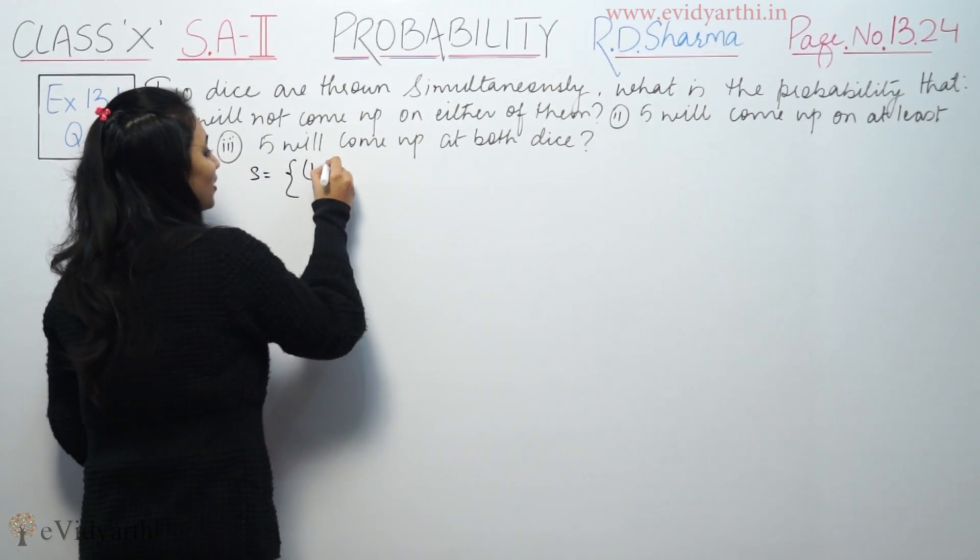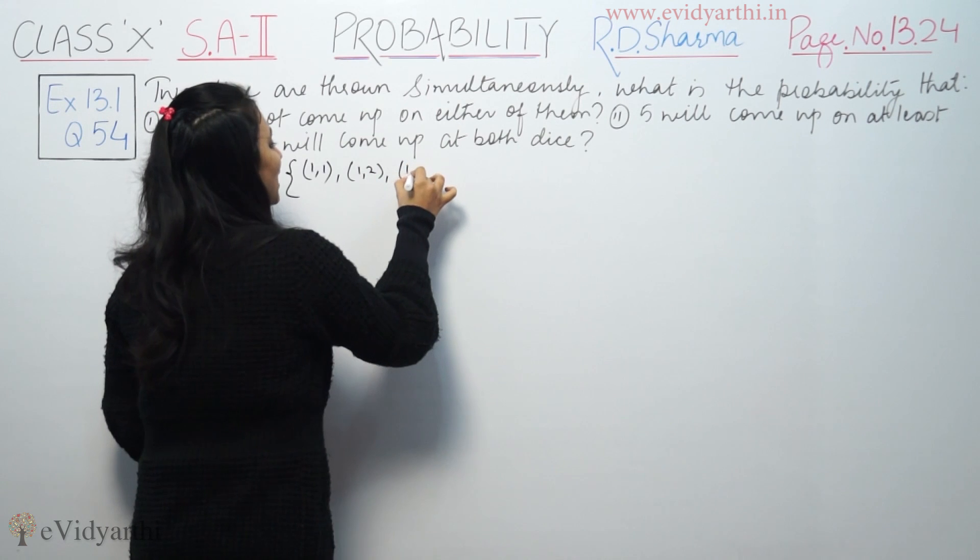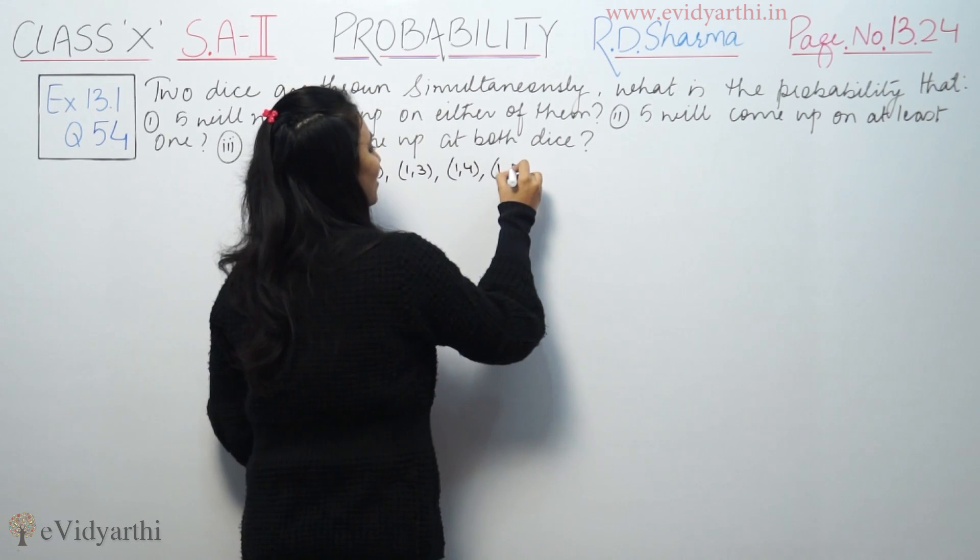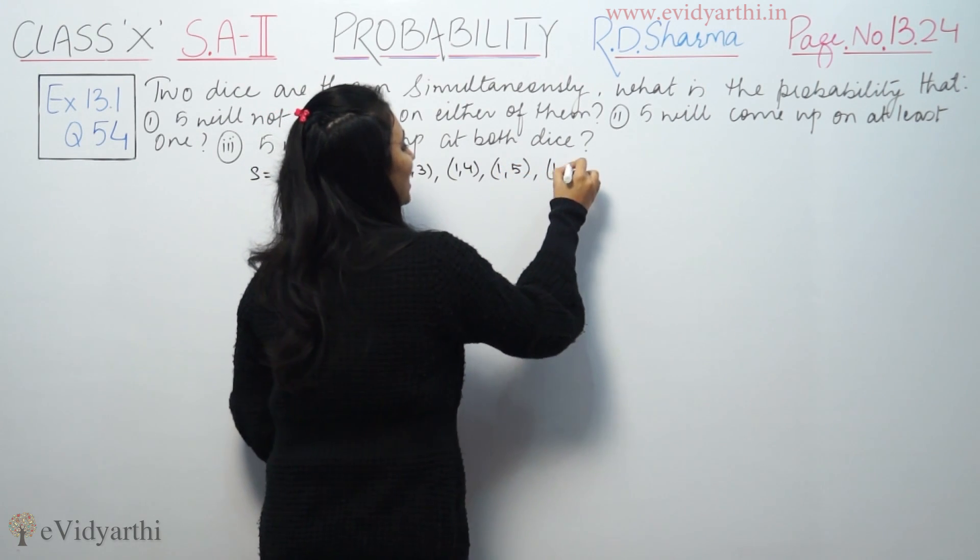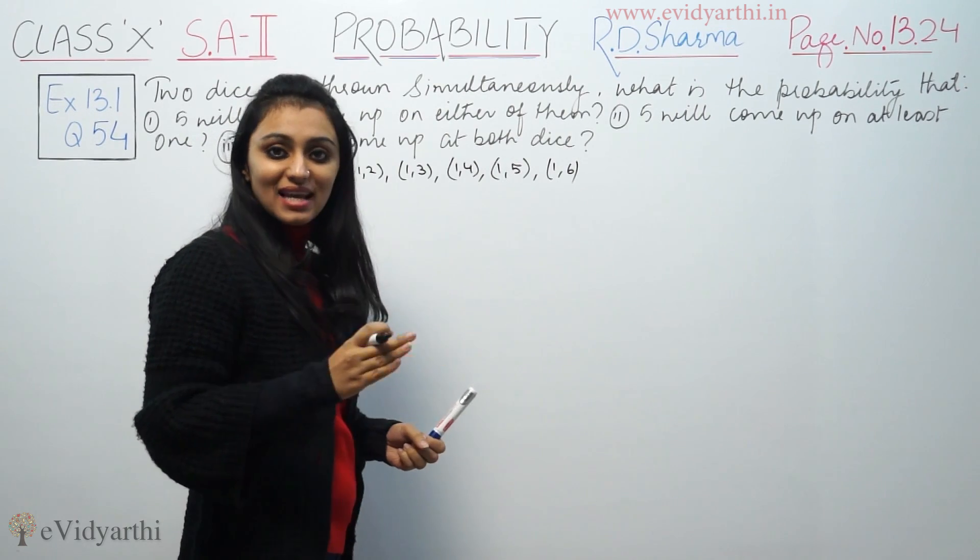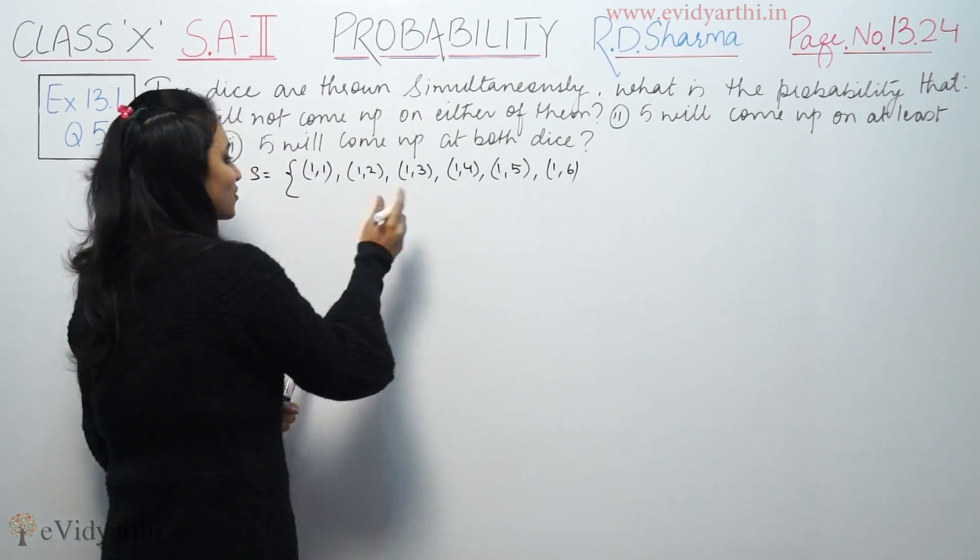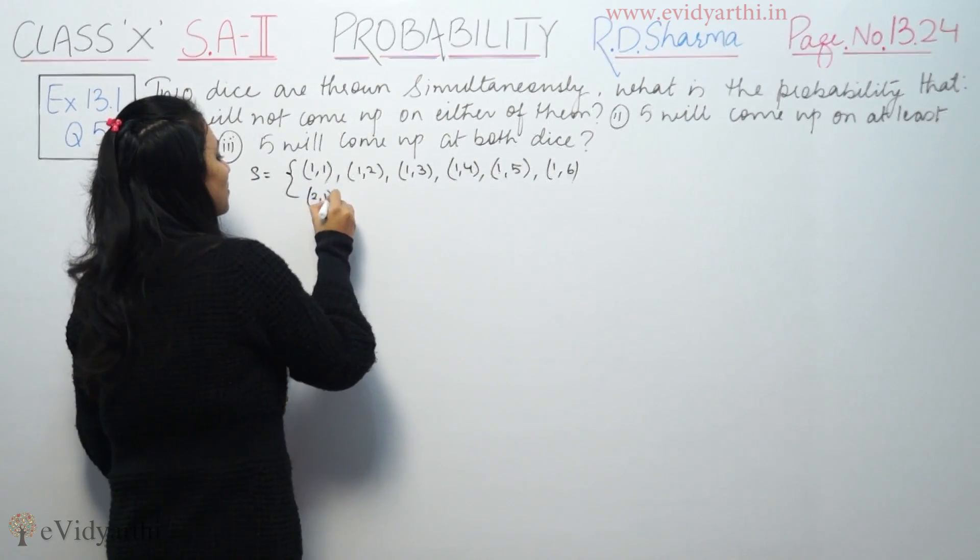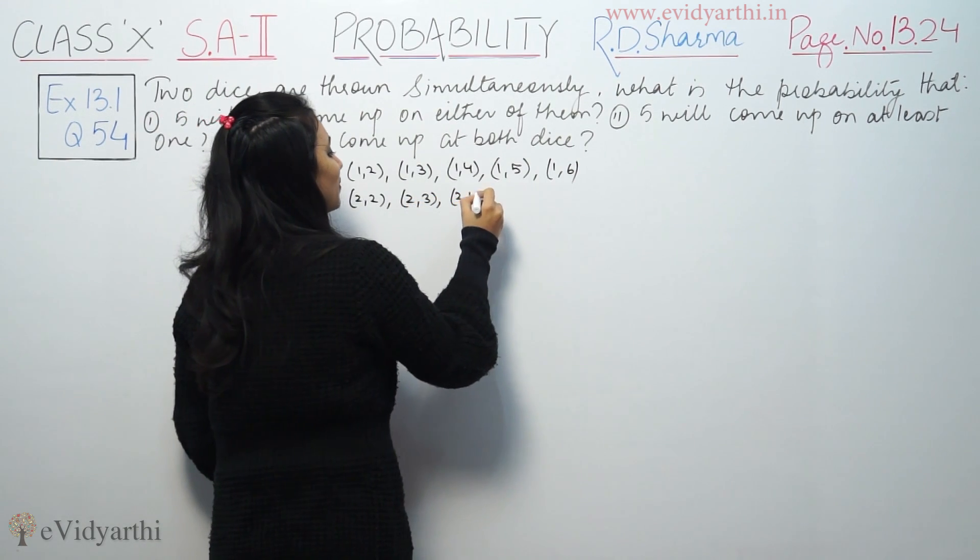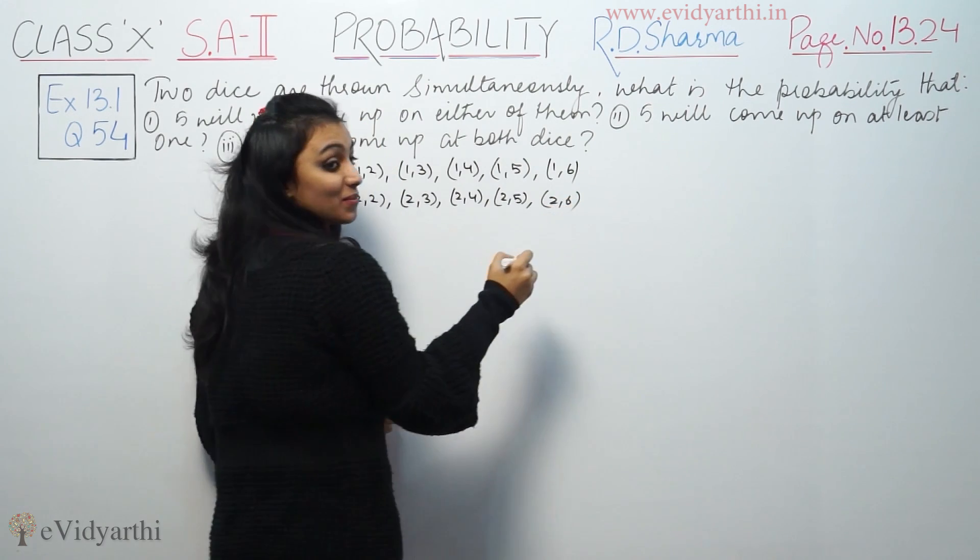You can have 1 comma 1, 1 comma 2, 1 comma 3, 1 comma 4, 1 comma 5, 1 comma 6. If you throw 2 dice, you can have maximum 6 cases. Because there are 6 numbers: 1, 2, 3, 4, 5, 6. First die showing 2: 2 comma 1, 2 comma 2, 2 comma 3, 2 comma 4, 2 comma 5, 2 comma 6.